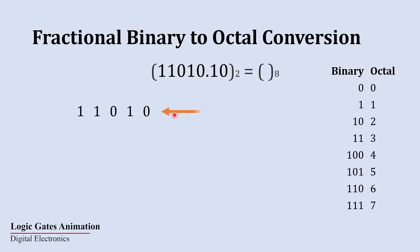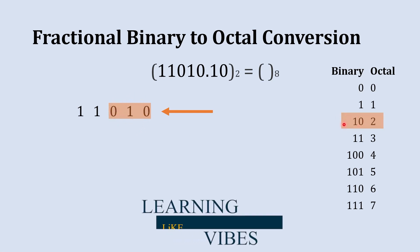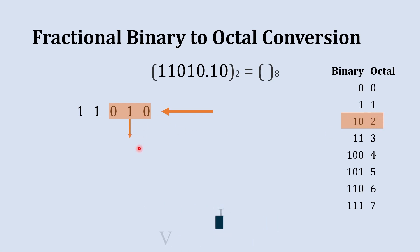From the right side, we are going to start creating groups of three digits. The first group of three digits is 0 1 0. Now let's find the octal equivalent to this binary number. 0 1 0 in binary is equivalent to octal 2, so below this we are going to write 2.